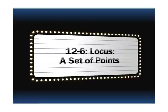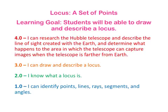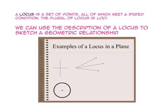Lesson 12-6 is on locus, a set of points. Take a minute to read over the learning goal and scale, and find where you are on the scale before we begin the lesson. A locus is a set of points, all of which meet a stated condition. The plural of locus is loci. We can use the description of a locus to sketch a geometric relationship.